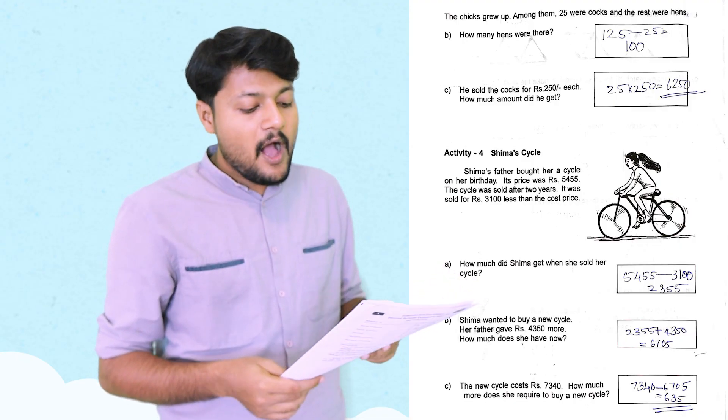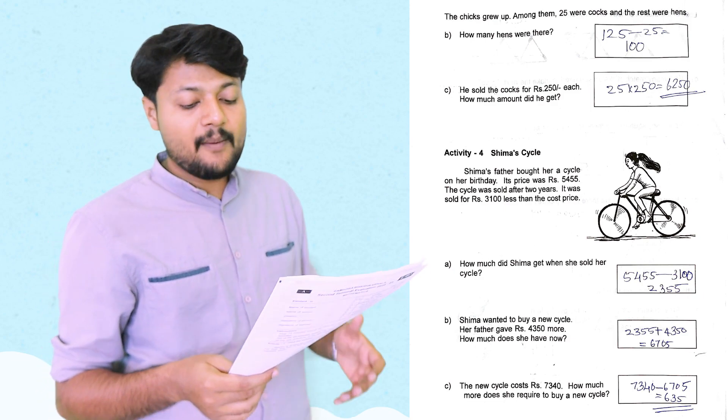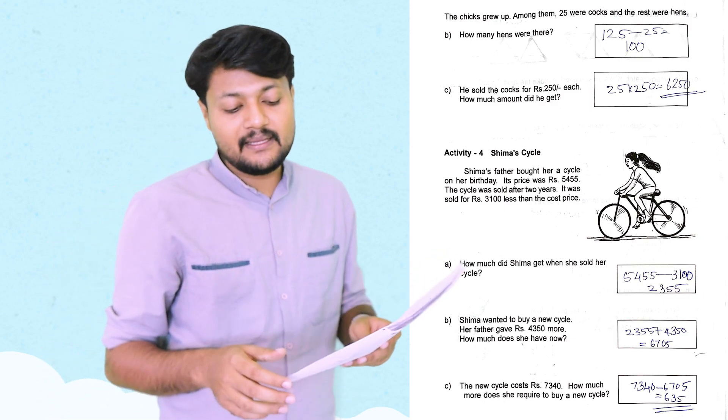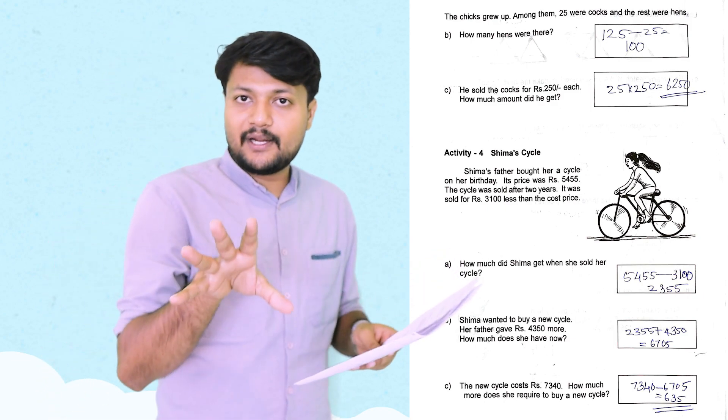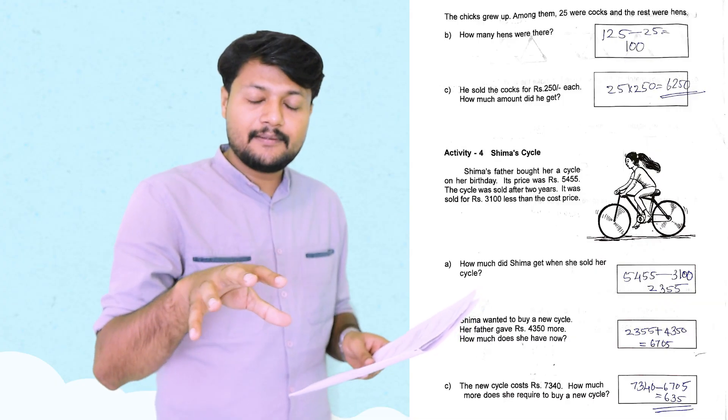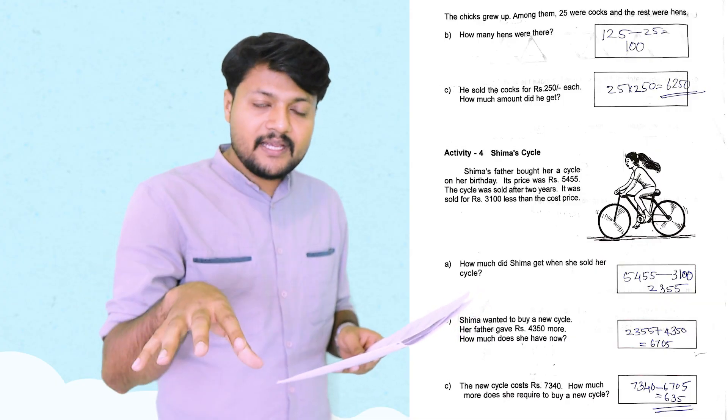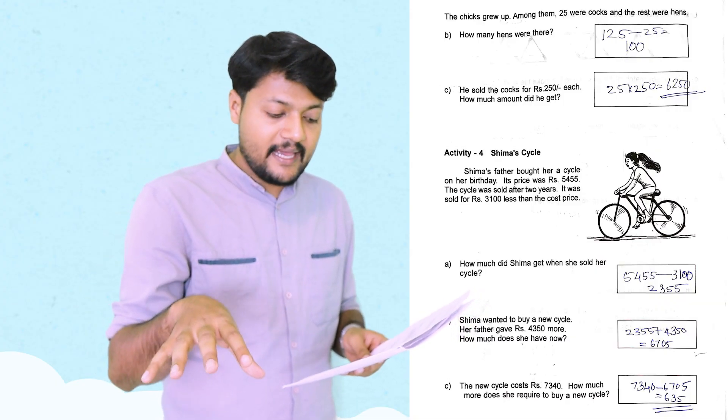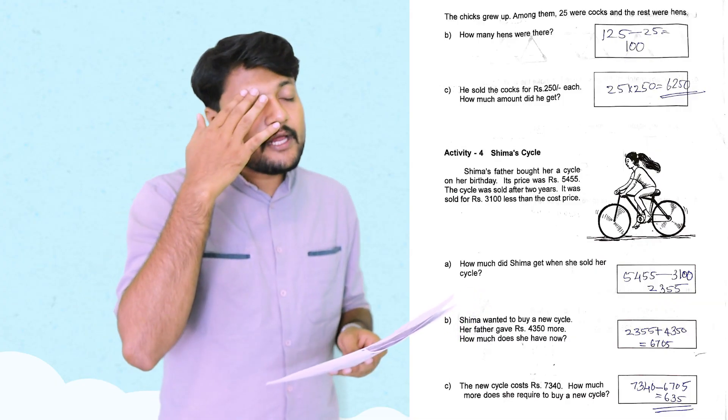How much did Shima get when she sold her cycle? Shima's number. How much did Shima get? We'll give you the same time. 5,000, 4,000, 5,000.